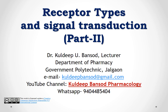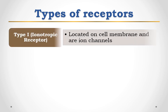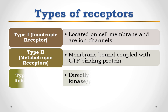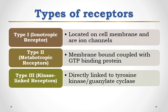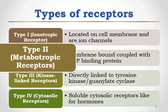In our previous video, we talked about ionotropic receptors. As all of you know, there are four types of receptors: ionotropic, metabotropic, kinase-linked receptors, and the last one is cytosolic receptors. In this video, we are talking about metabotropic receptors.